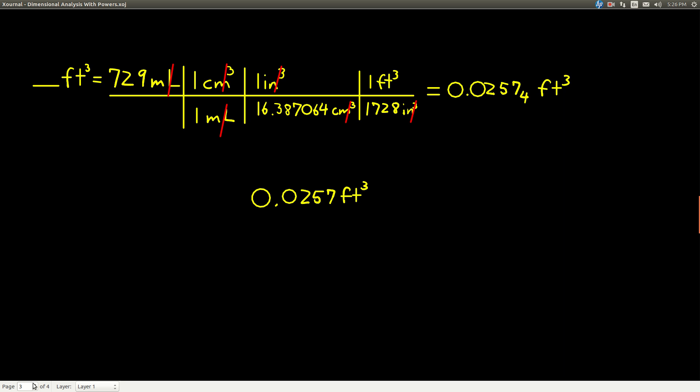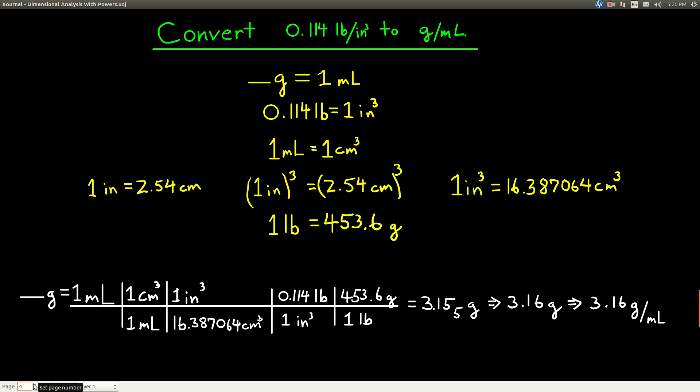Let's look at one more example here. We want to convert 0.114 pounds per inches cubed to grams per milliliter. Now this has you doing two things. First, it has us doing what we just did, doing a conversion with a power, but it also involves these compound units, which you've seen a couple times. Whenever I have a compound unit, something over something, pounds over inches cubed, grams over milliliters, I want to convert from one compound unit to another. We want to go from pounds per inches cubed to grams per milliliter.